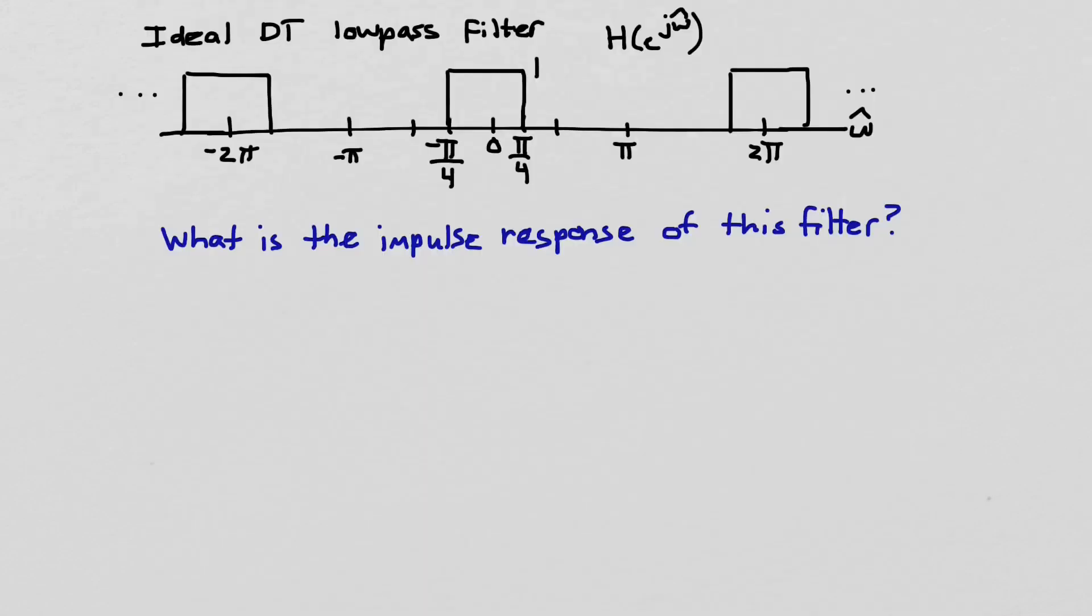Today's task is to find the impulse response of the ideal low-pass filter that has the frequency response shown here. Now it's important to remember that for discrete-time system frequency responses, they are periodic with period 2π, so that this is the main frequency response from -π to +π, and then it just repeats outside of that.